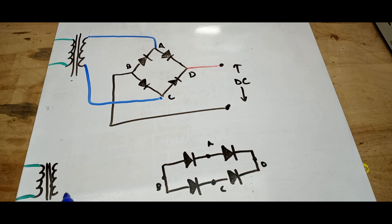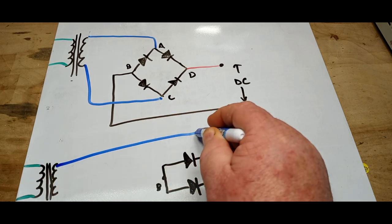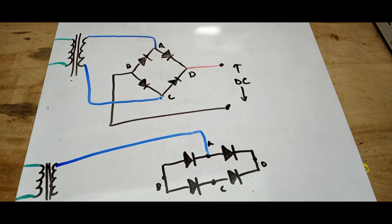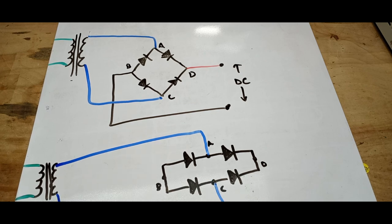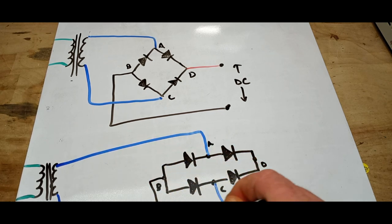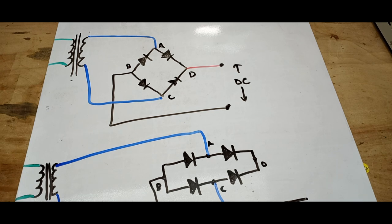So now we can bring A here and C here. Then B, which is our DC negative, comes out over here.